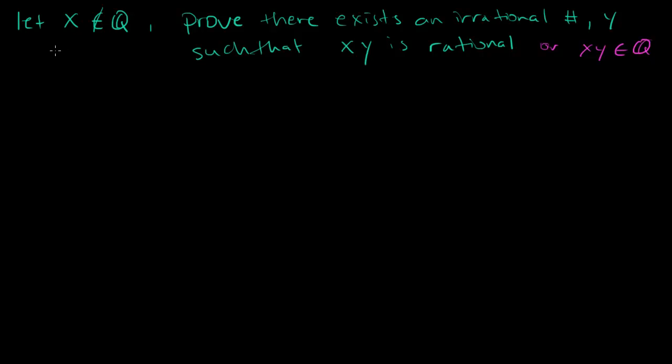Okay, for this video we're going to let x be an irrational number and prove that there exists another irrational number y such that the product xy is rational, or xy is an element of the rational numbers.